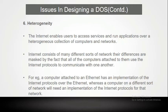Heterogeneity: the internet enables users to access services and run applications over a heterogeneous collection of computers and networks. The internet consists of many different sorts of networks, but the differences are masked by the fact that all computers use internet protocols to communicate with one another. For example, a computer attached to ethernet has an implementation of the internet protocols over ethernet, whereas a computer on a different network will need an implementation of the internet protocol for that network.